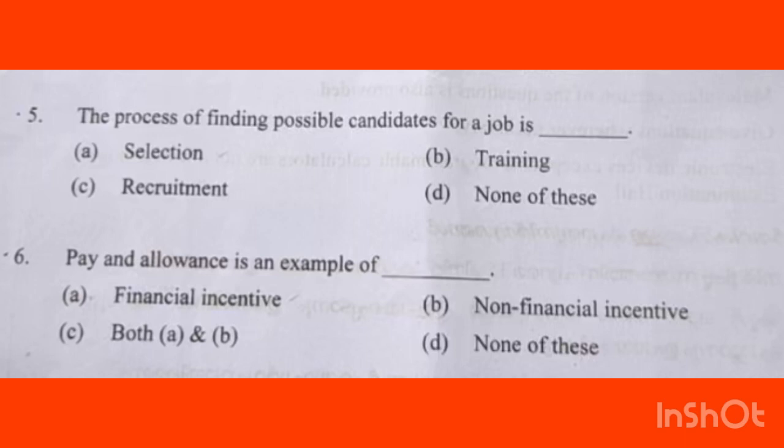Pay and allowance is an example of: Financial Incentive, Non-Financial Incentive, Both A and B, or None of these. Option A — Financial Incentive. Pay and allowances fall under financial incentives.